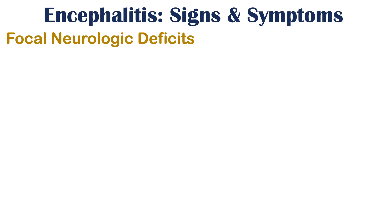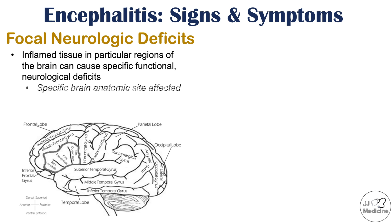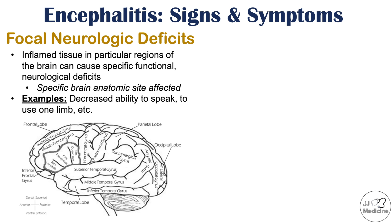Focal neurological deficits can also occur. Inflamed tissue in particular regions of the brain can cause specific functional or neurological deficits. If the frontal lobe is more inflamed, personality may be affected. If Broca's or Wernicke's area are affected, aphasia or difficulty speaking or understanding speech can occur. If the motor or sensory cortex is affected, sensation or ability to move limbs can be impaired — similar to what happens in a stroke.